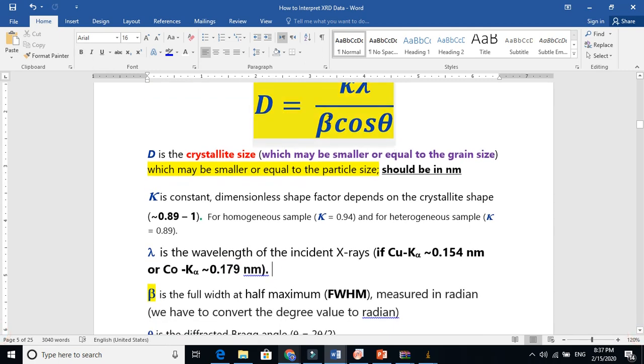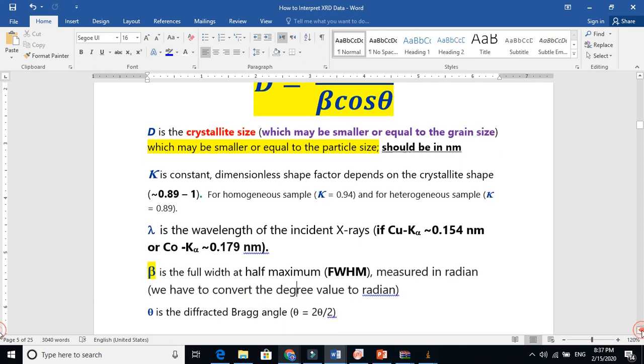This beta is basically the full width at half maxima. And we will measure this in radian, because I told that it is basically in degrees, but we have to convert this into radians. And theta is basically the Bragg angle, and when you take 2 theta, if you take 50 here for 2 theta, we have to divide by 2, and it will be equal to 25 degrees.